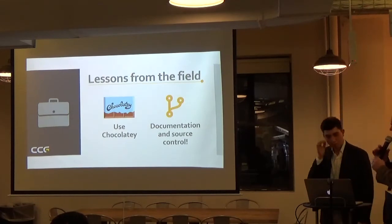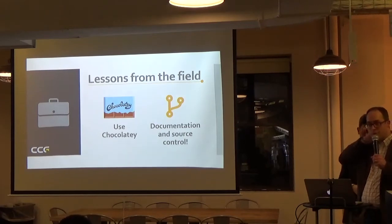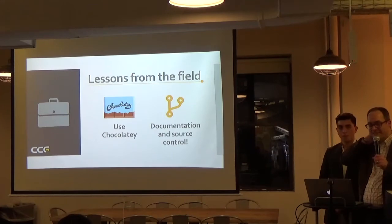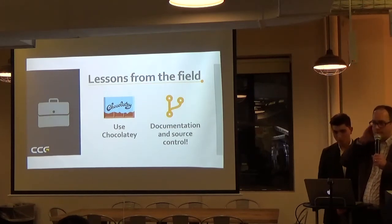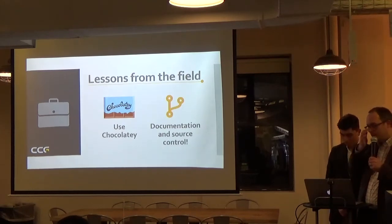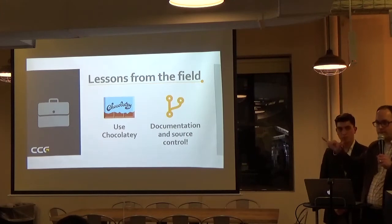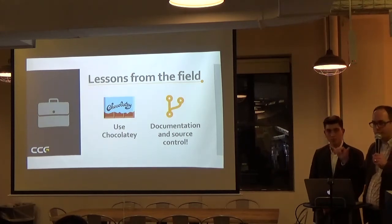With a distributed version control system like Git — not Visual Source Safe — you can actually have different people working on the same thing at the same time. Somebody can try one thing while somebody else tries something else, and you can merge it later. It's a lot easier to work in parallel. GitHub is the cloud-hosted option; Git itself is the version control system. I've also used Mercurial.